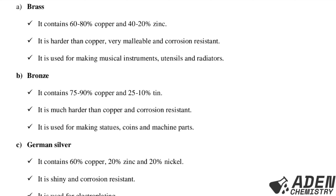German silver contains 60% copper, 20% zinc, and 20% nickel — so this alloy contains three elements: copper, zinc, and nickel. Its properties: it is shiny and also resistant to corrosion. The use of German silver: it is used for electroplating.